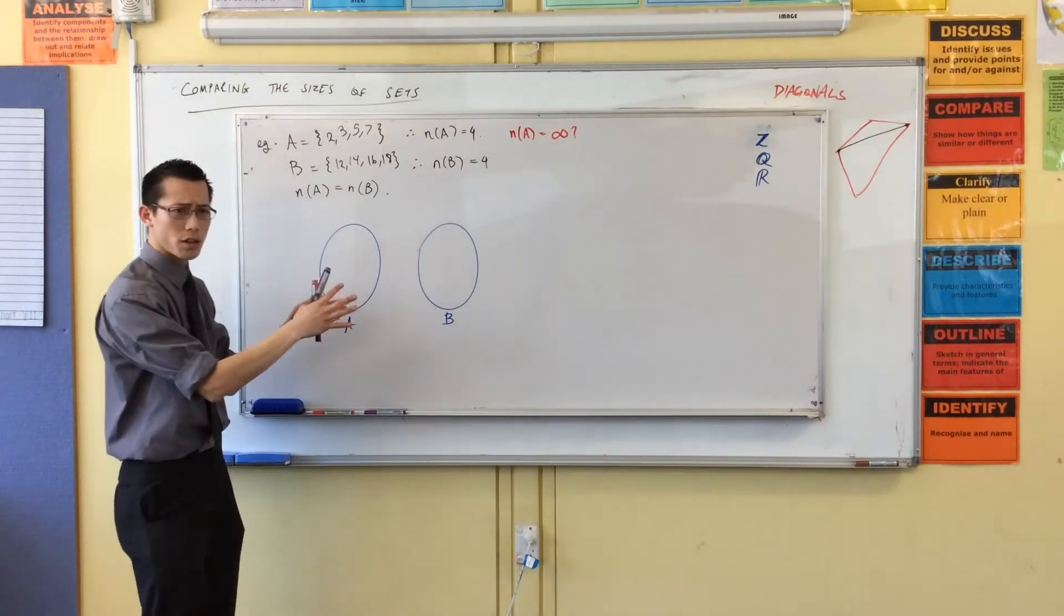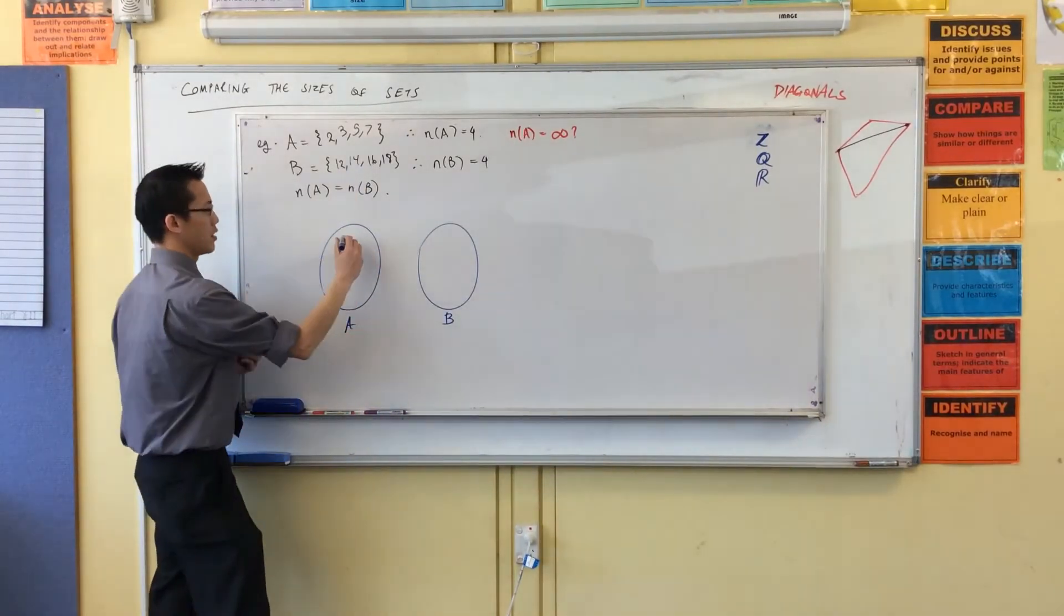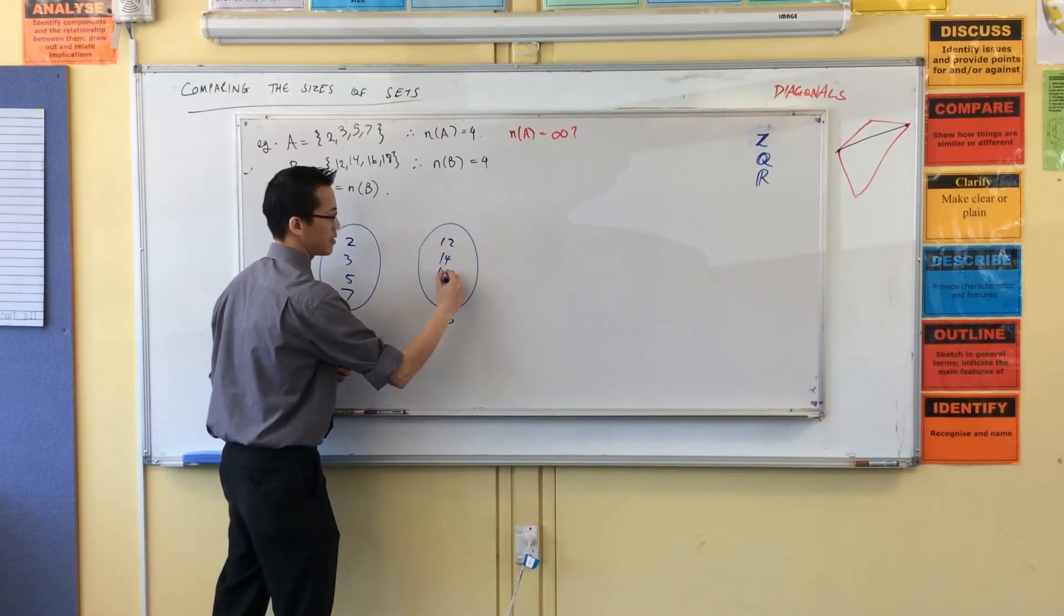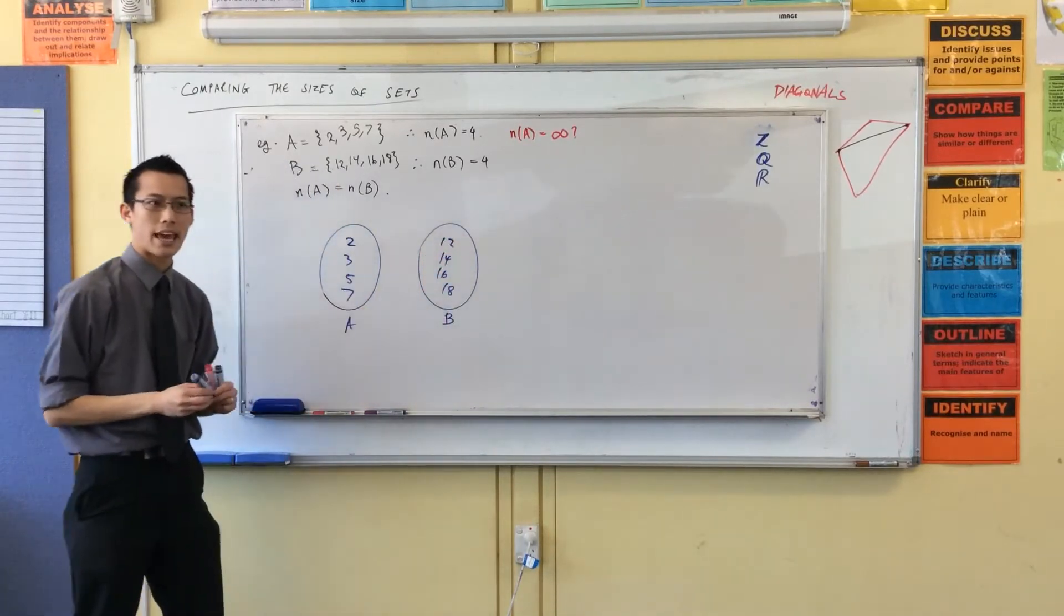So I'm going to put all the elements in there. Sorry, I'm sticking with blue. 2, 3, 5, 7, 12, 14, 16, 18. Okay? Now because they have the same size, I can do this.